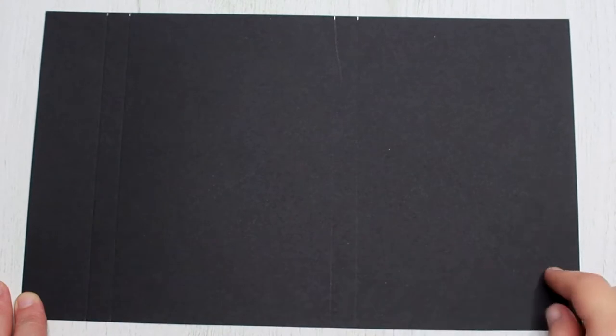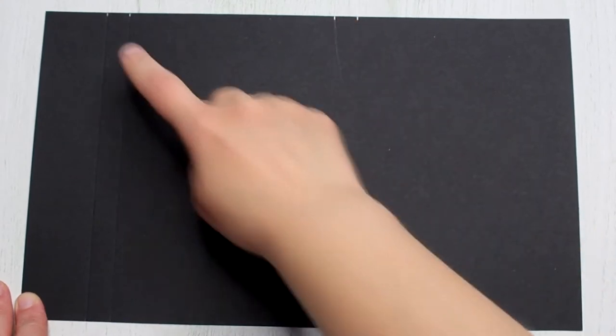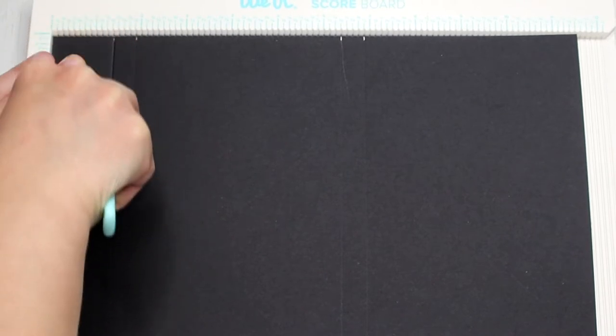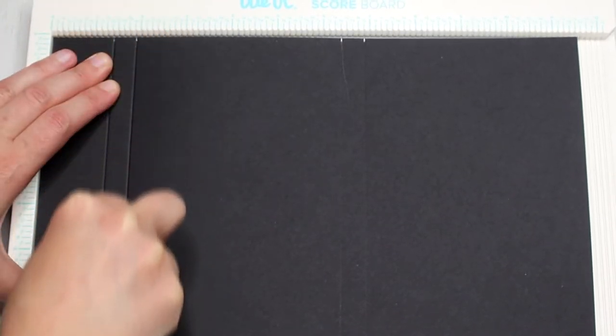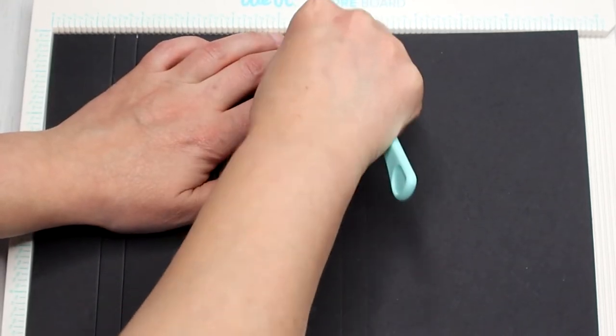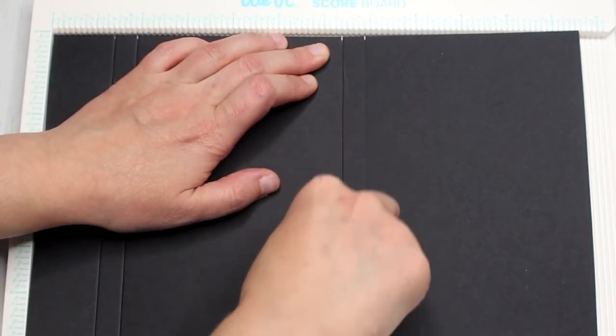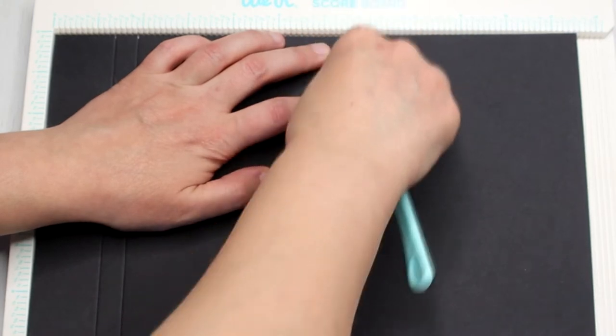Start with the base for your folder. I used a black cardstock trimmed to 11 and a half inches by 7 inches. Then score the cardstock at 1 and 3 eighths of an inch, 1 and 7 eighths of an inch, 6 and 3 eighths of an inch and 6 and 7 eighths of an inch.